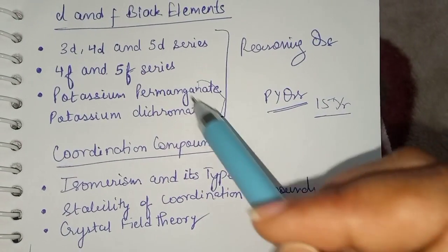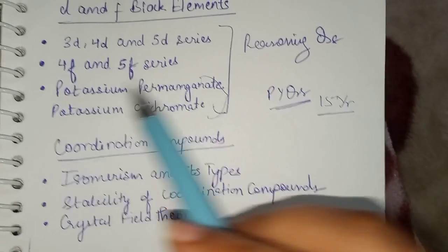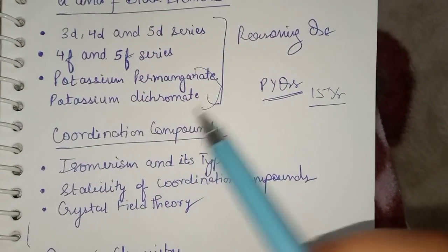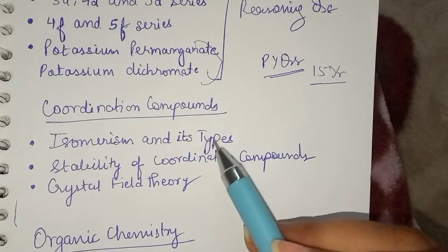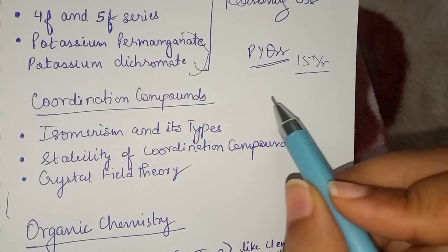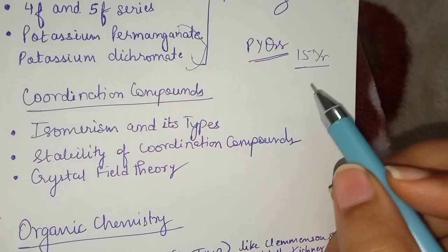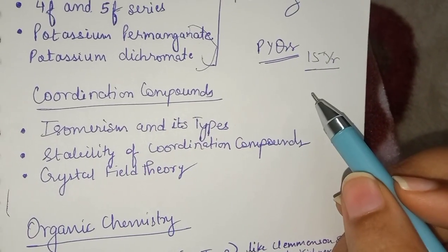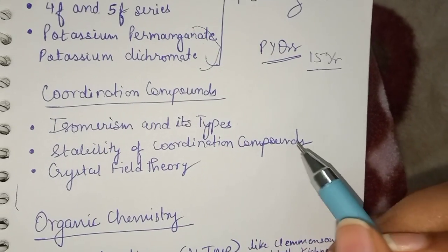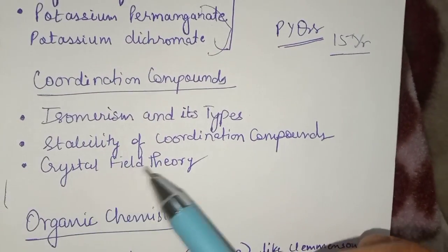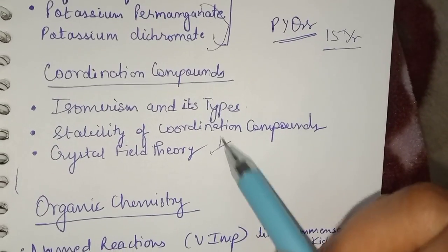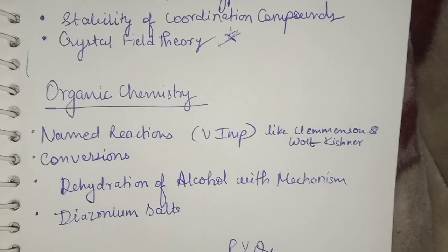Then these two are lengthy but you have to do: potassium permanganate and potassium dichromate. For coordination compounds: isomerism and its types. They will give you this compound and ask you which type of isomerism it exhibits. Now the stability of coordination compounds, the nomenclature also, crystal field theory. Important organic chemistry.